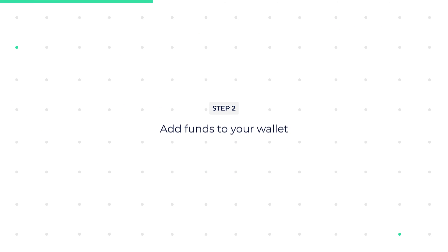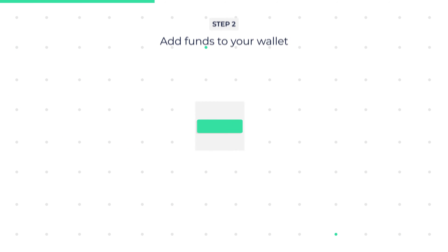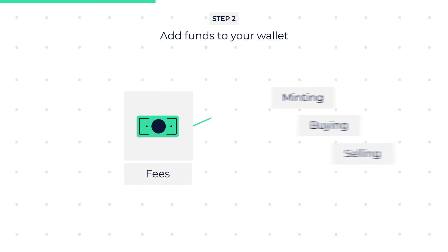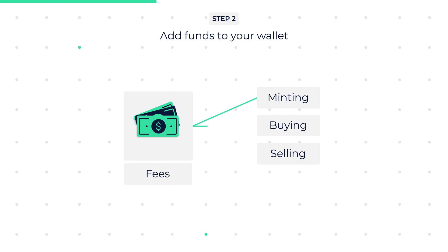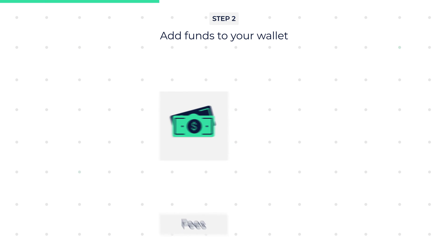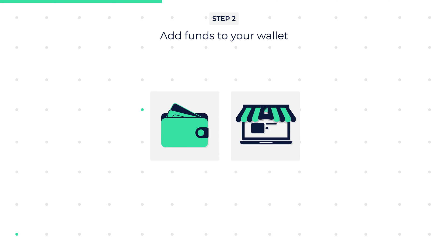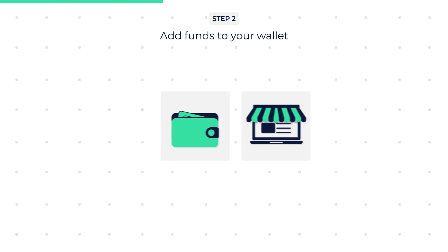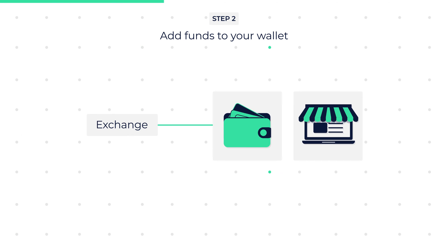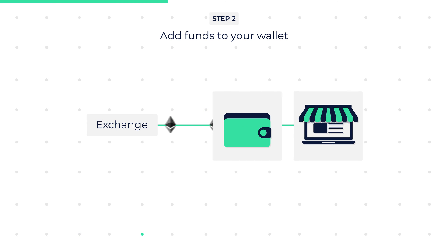Step 2: Add funds to your wallet. There are fees to pay when minting, buying, and selling NFTs. These fees are paid from your wallet that is connected to the NFT marketplace. Add funds to your wallet by transferring Ether from any other exchange to your personal wallet's receive address and wait for the transaction to complete.